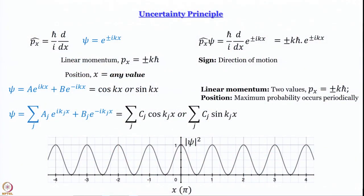Let us now go much further. We take a large number of e^(ikx) and e^(−ikx) terms for different values of k and add them up: Σ_j [a_j·e^(ik_j·x) + b_j·e^(−ik_j·x)], choosing coefficients to get something like Σ_j c_j·cos(k_j·x). Momentum now has many values — plus or minus k_1·ℏ, k_2·ℏ, and so on — so momentum has become significantly more uncertain. In the example shown, about 10 values of j are combined.